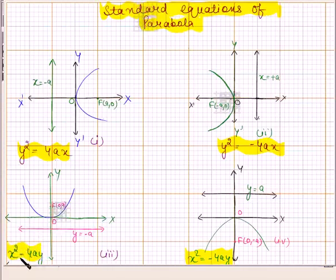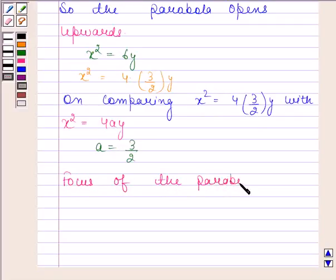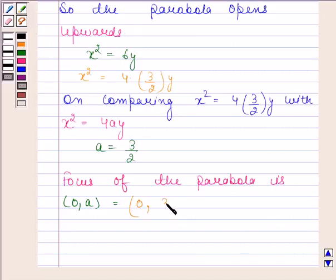We know that if the equation of the parabola is of the form x squared equals to 4ay, then its focus is at the point (0, a) and directrix is y equals to minus a. Here, the equation is also of the form x squared equals to 4ay. So the focus of the parabola is (0, a). Since a is equal to 3/2, the focus of the parabola x squared equals to 6y is (0, 3/2).